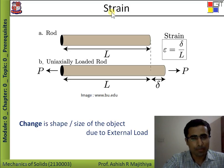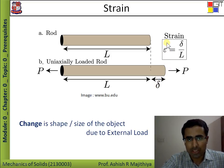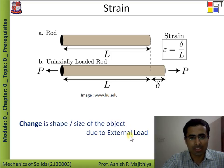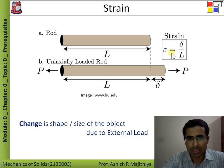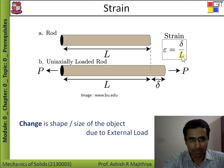The next concept is strain. Whenever force is applied, deformation will occur to some extent — the body will deform. The deformation or change in length is represented as delta. Strain is the change in shape or size of the object due to external load. The calculation of strain equals delta divided by L, where delta is the change in length and L is the original length. Change in length upon original length — this is called strain.